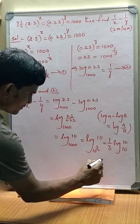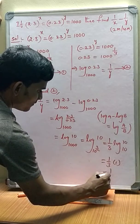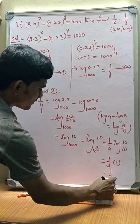This is equal to 1 by 3 into 1, that is equal to 1 by 3.